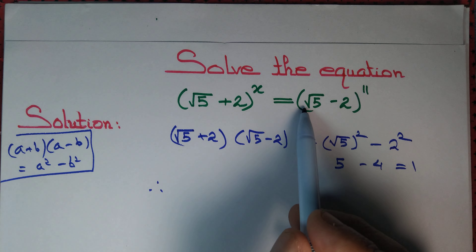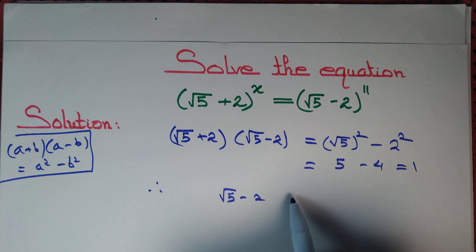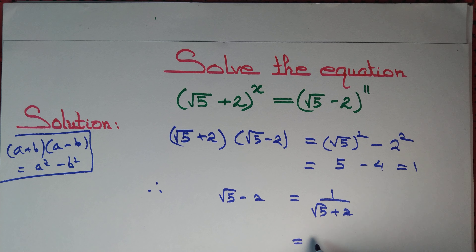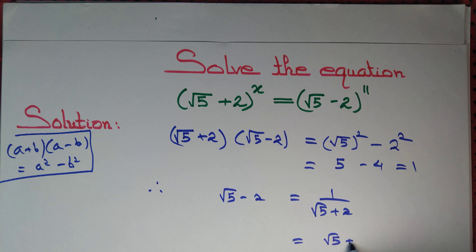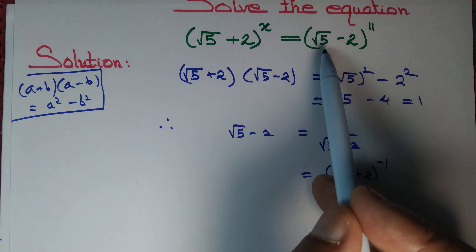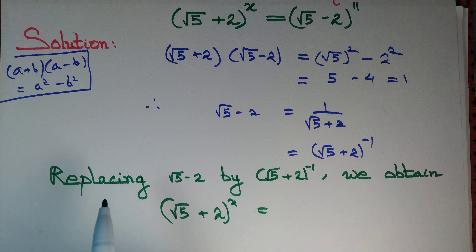Therefore, (√5 - 2) can be written as 1/(√5 + 2), which equals (√5 + 2)^(-1). So we can replace (√5 - 2) with (√5 + 2)^(-1) to get the same base.